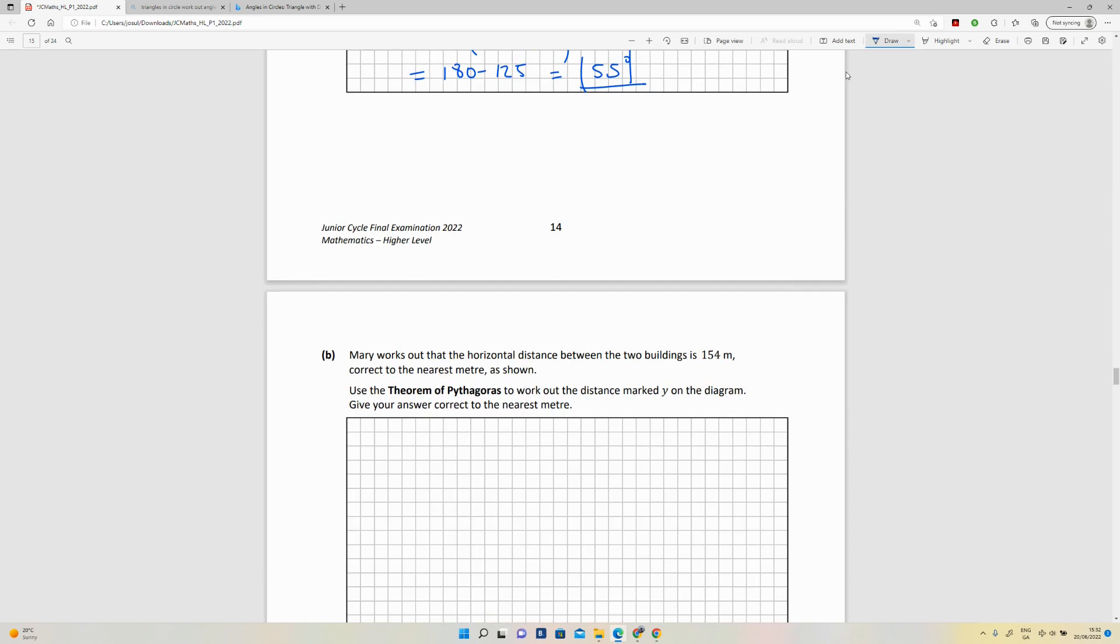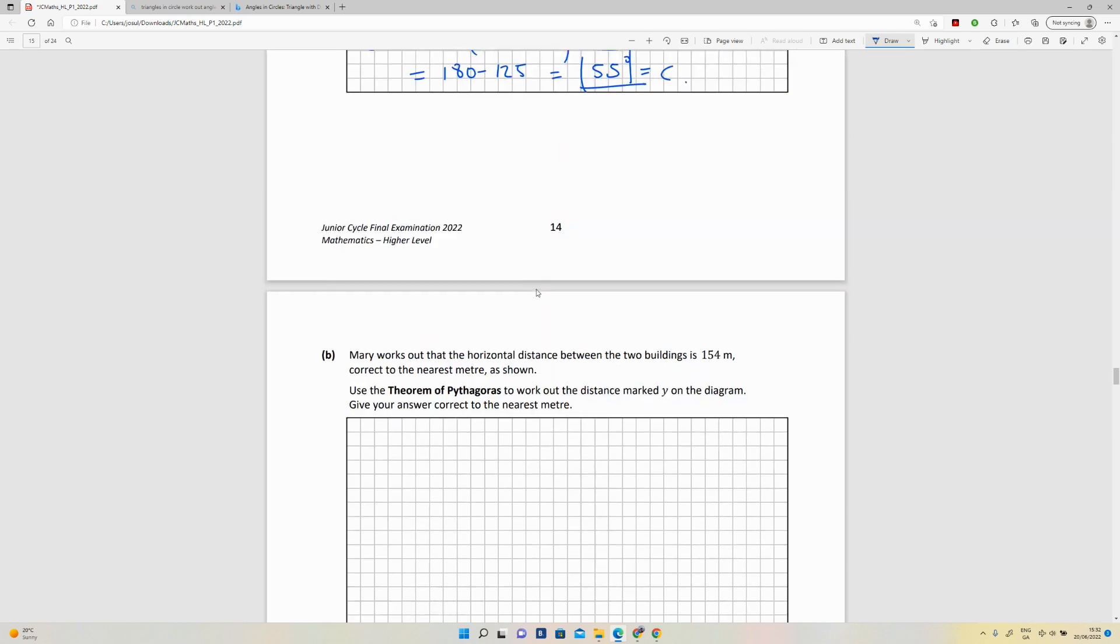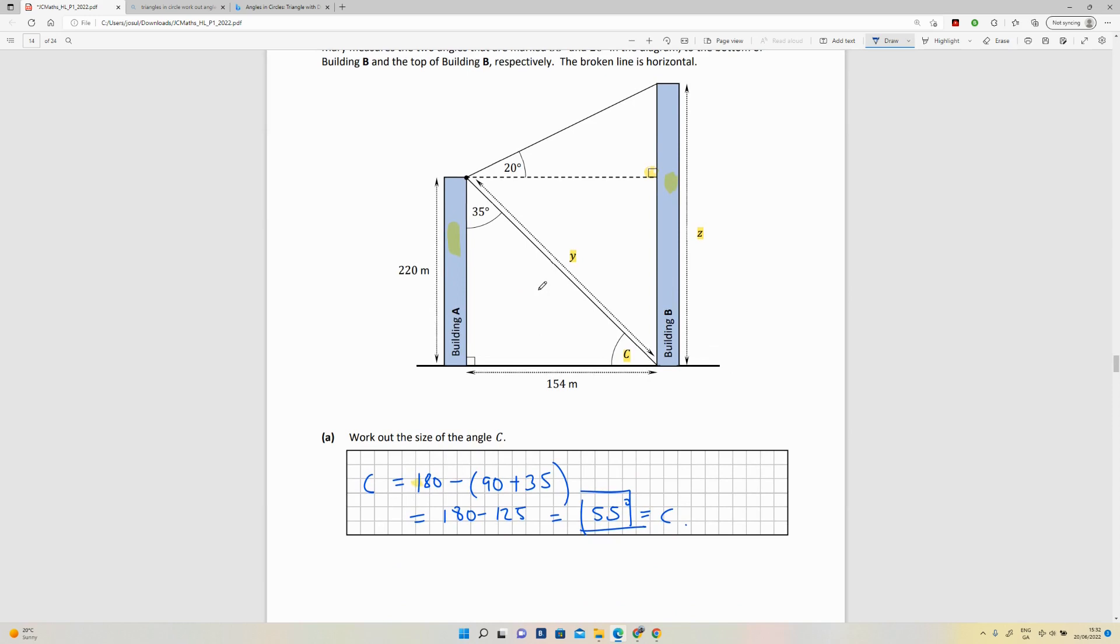Mary works out that the horizontal distance between the two buildings is 154 meters, correct to the nearest meter, as shown. The distance between the two buildings, that's already in the diagram, it's down there. So we know now that the length of that side down there is 154, and we know that the length of the dotted horizontal line above is 154 as well.